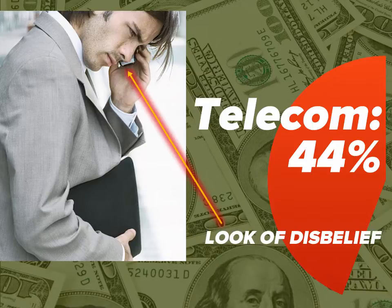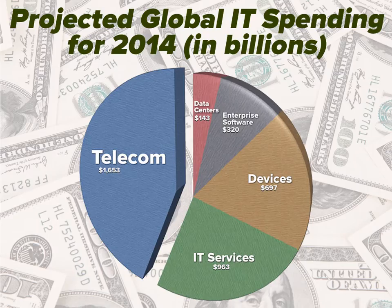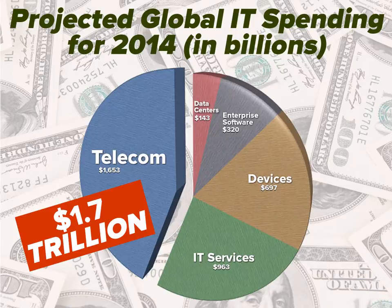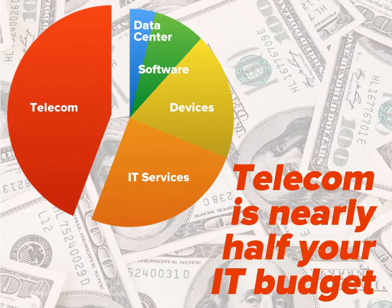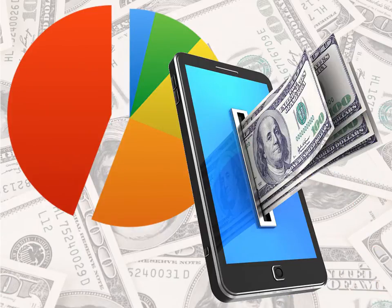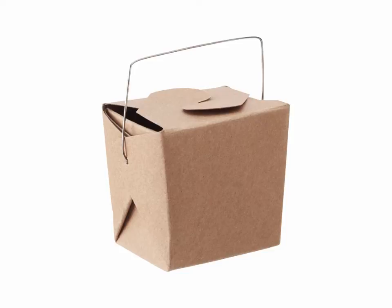That's a bit hard to believe, and even our business stock photo model isn't buying it. In case you were wondering, those numbers come from Gartner's projections for the 2014 Worldwide IT Budget published in January 2014. They published these figures in a table, which we turned into the pie chart you're now looking at. And now we come to one of the first two things you should take away from this video: telecom is nearly half your IT budget. As the biggest slice of the IT budget pie, it's also the first and best place to look for savings opportunities.